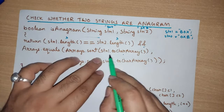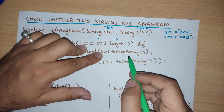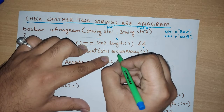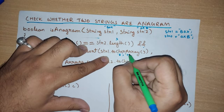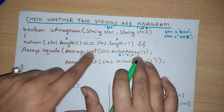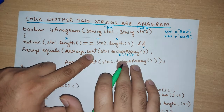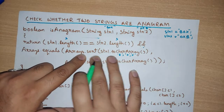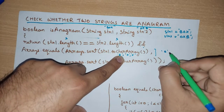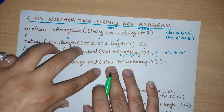After the length check, we use the AND operator and go to the next part. For str1 ('box'), we call str1.toCharArray(), which converts the string into a character array: ['b', 'o', 'x']. This character array is passed as a parameter to Arrays.sort(), which is a utility function used to sort the array. Since 'box' is already alphabetically sorted, it remains ['b', 'o', 'x'].